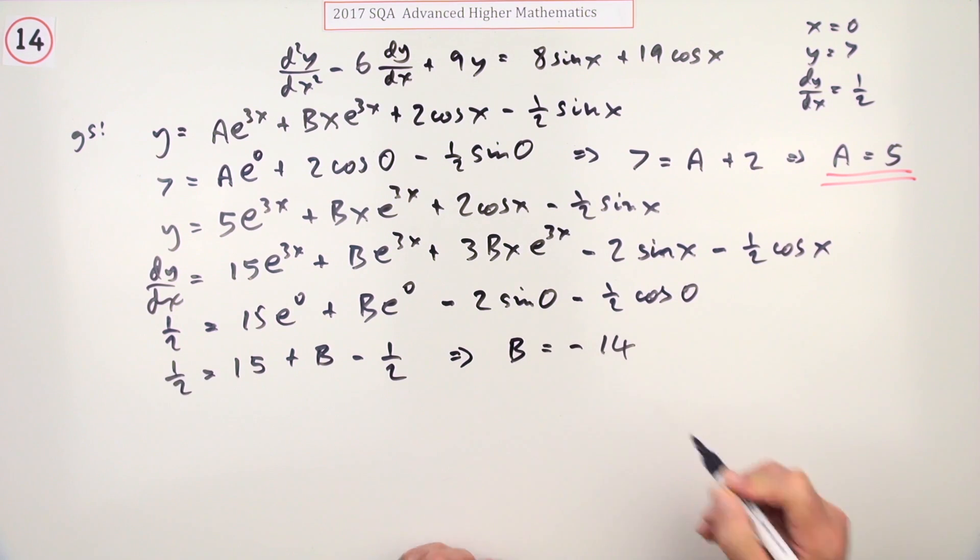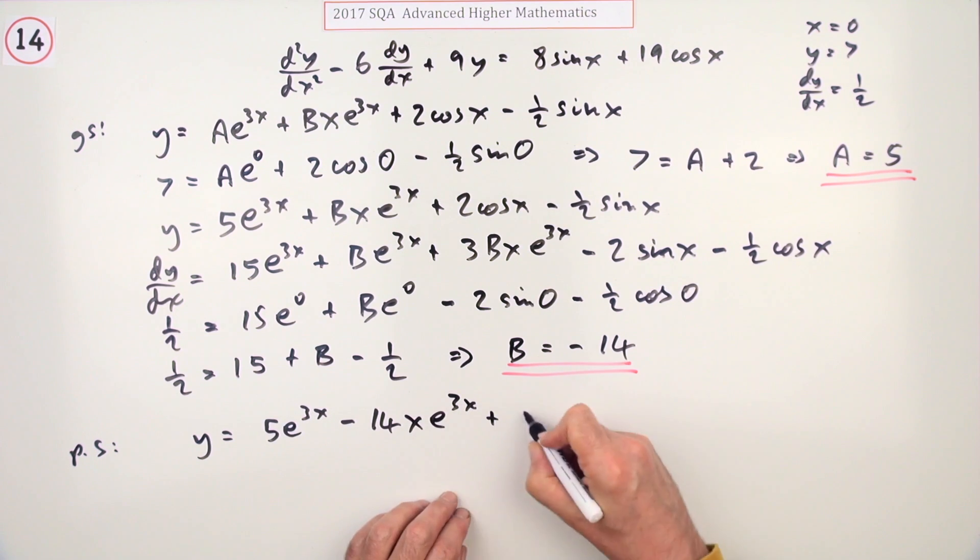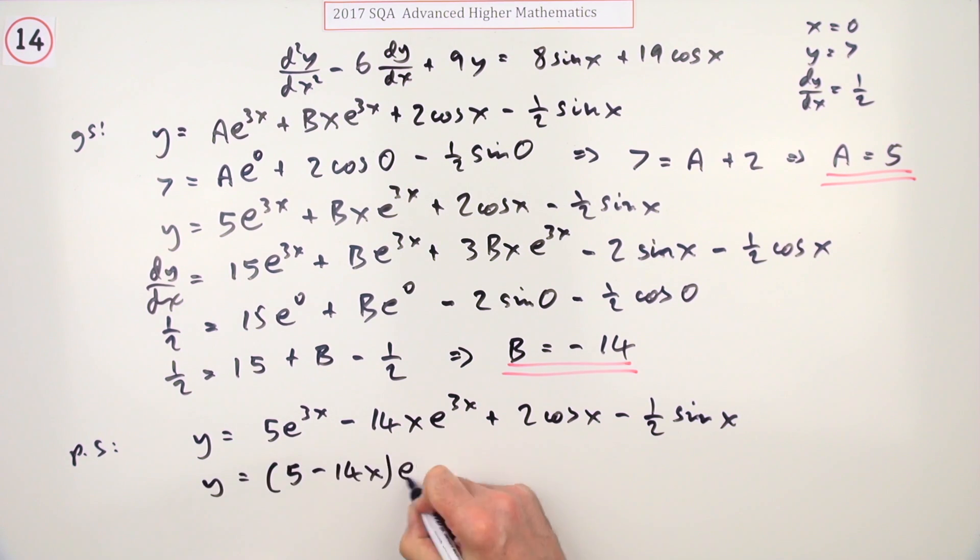Now just put it all together for the particular solution. y equals 5e to the 3x minus 14xe to the 3x plus 2 cos x minus a half sine x. Or you could join them together like that.